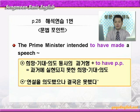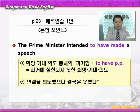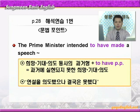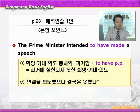Intended to have made a speech, 연설을 하려고 의도했었다 이런 얘기죠. 여기서 보면 희망이나 기대, 의도를 나타내는 동사의 과거형 뒤에 to have pp로 완료부정사가 나오게 되면 과거에 실현되지 못한 희망, 기대, 의도를 나타낸다고 했습니다. 분명히 배웠던 겁니다. 그래서 연설을 의도했으나 결국은 못했다는 의미가 되는 것입니다. 그럼 2번을 할 차례죠.